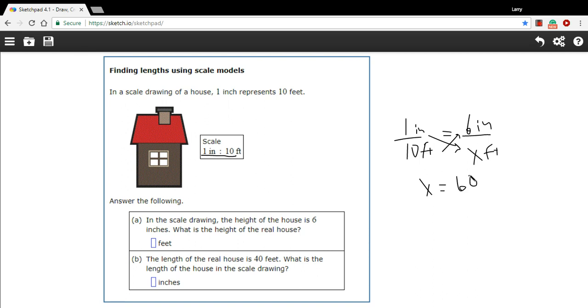So we have 60. And maybe that was easy enough for you to solve in your head. Every inch is 10 feet and there are 6 inches. So you knew that was going to be 60 feet. But in case it gets a little more complicated, setting up a proportion like this will definitely work every time.